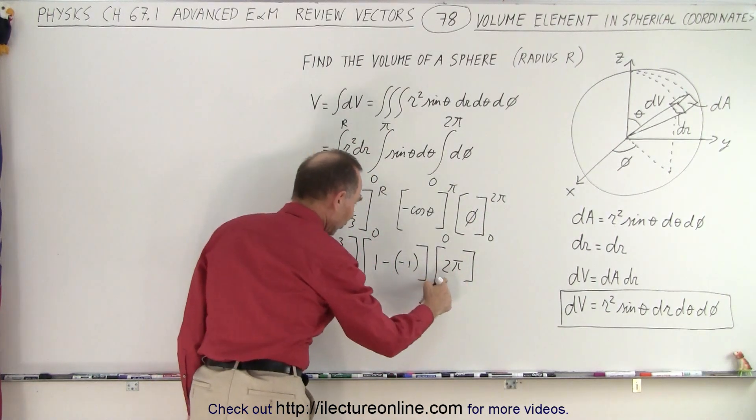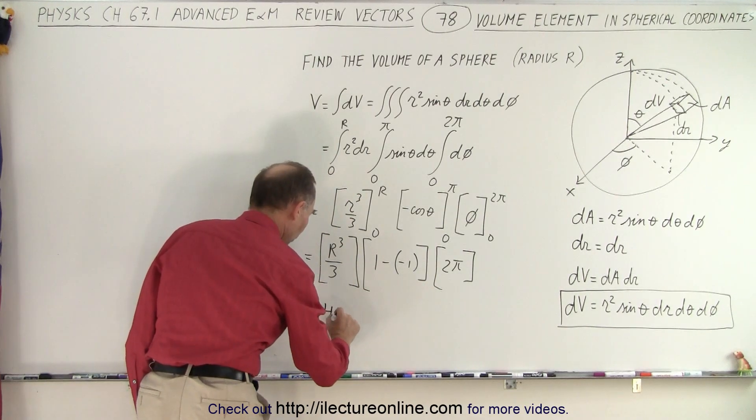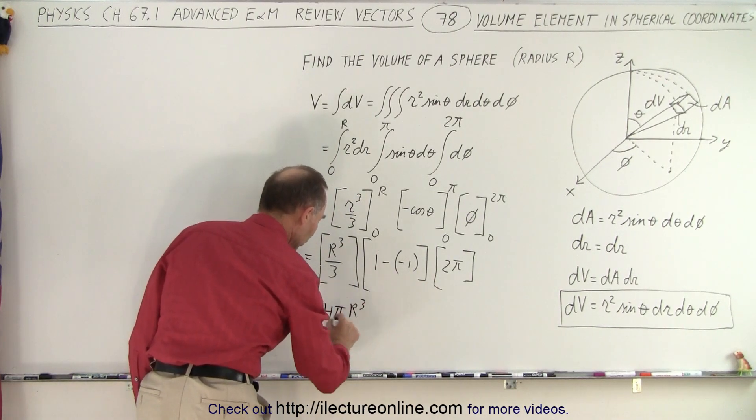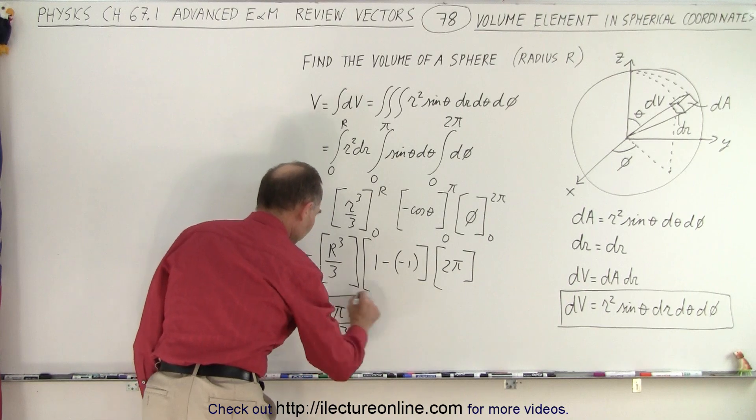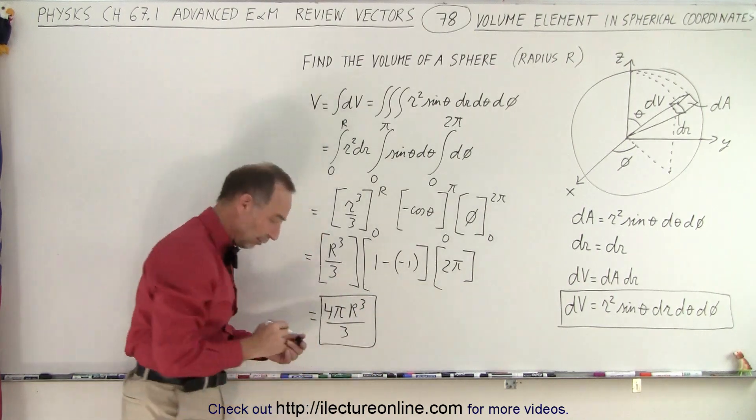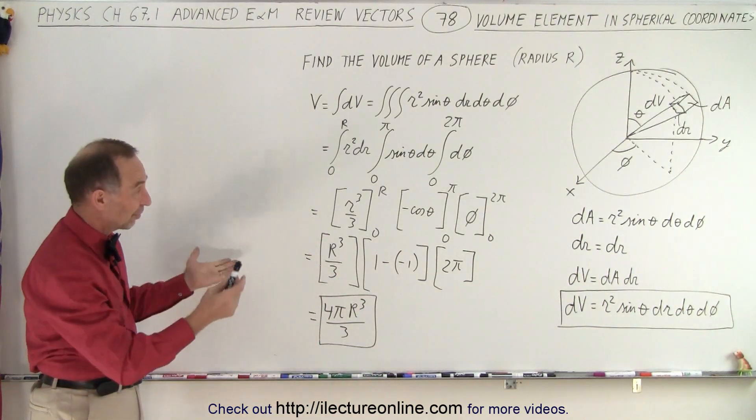Notice that the negatives are negated. So this is two times two which is four times pi. And this becomes four pi r cubed over three. Which by now most of us realize that is indeed the volume of a sphere.